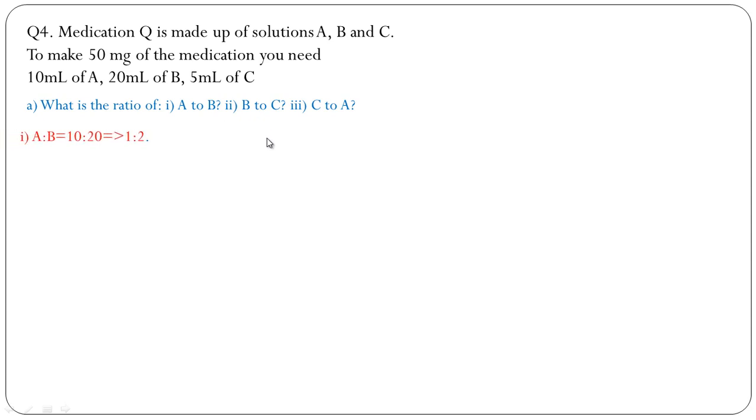Part (a): What is the ratio of A to B, B to C, and C to A? Let us first find ratio A to B, that is 10 to 20. We have cancelled down the ratio by dividing both sides by common factor, in this case 10. Now the ratio B to C, that is 20 to 5.